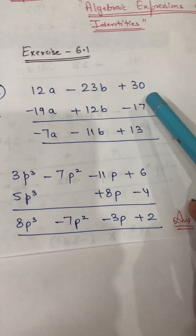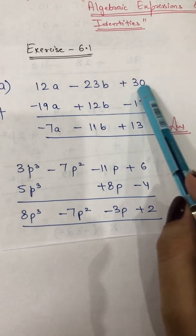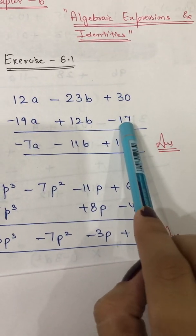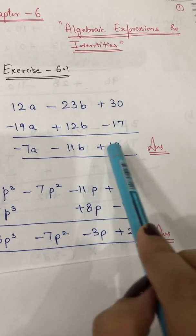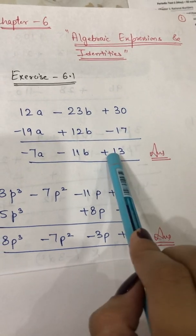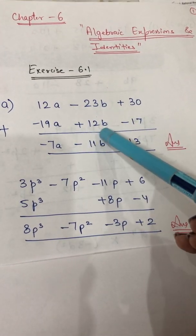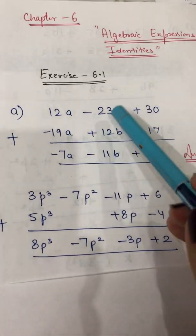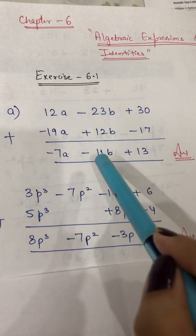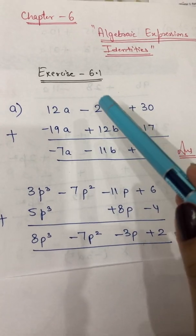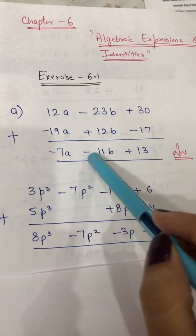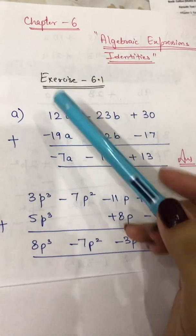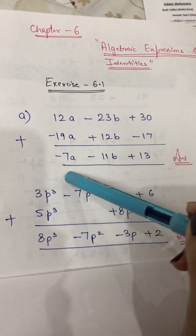Draw a line and perform addition. For the constants: +30 and −17 have opposite signs, so subtract and take the sign of the bigger value — result is +13. For the 'b' terms: −23 + 12, subtract and take the sign of the bigger value, 23 is bigger so result is −11b. For the 'a' terms: 12a − 19a, again subtract and take the sign of the bigger value — result is −7a.